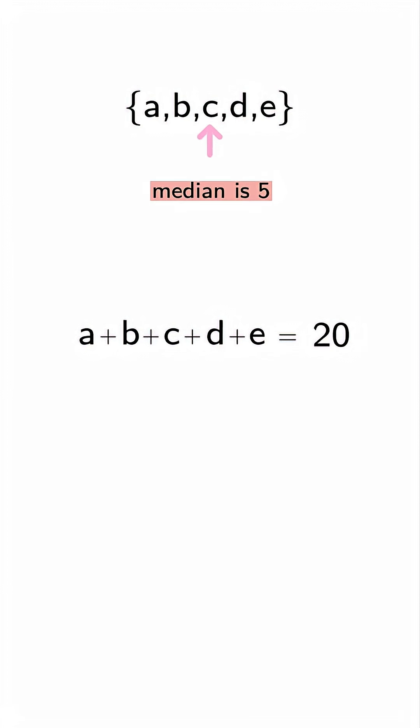Next, median means the middle number when the set is in order. So the third number must be five, and mode means the number that shows up the most. If the mode is one, there must be at least two ones.